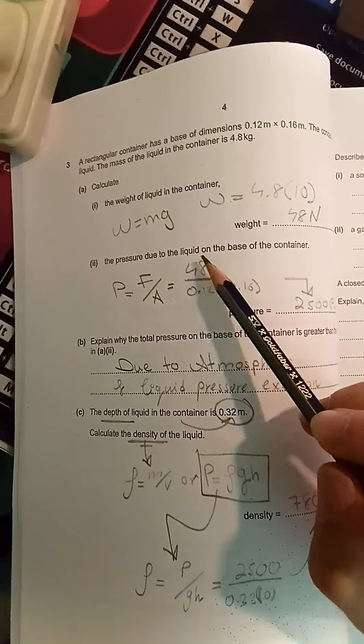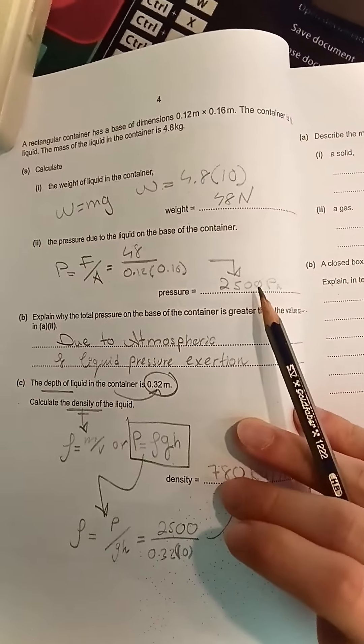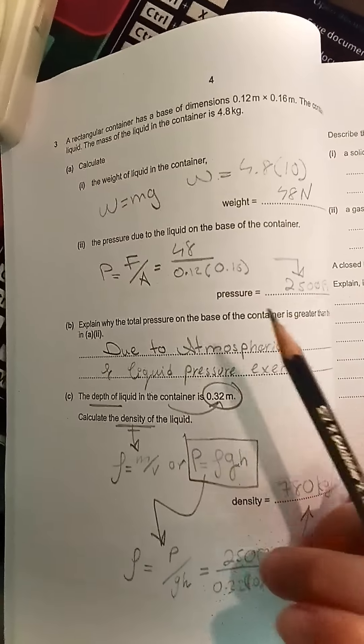So 48 divided by 0.12 times 0.16 equals 2500 Pascals. Pascal is the SI unit of pressure.